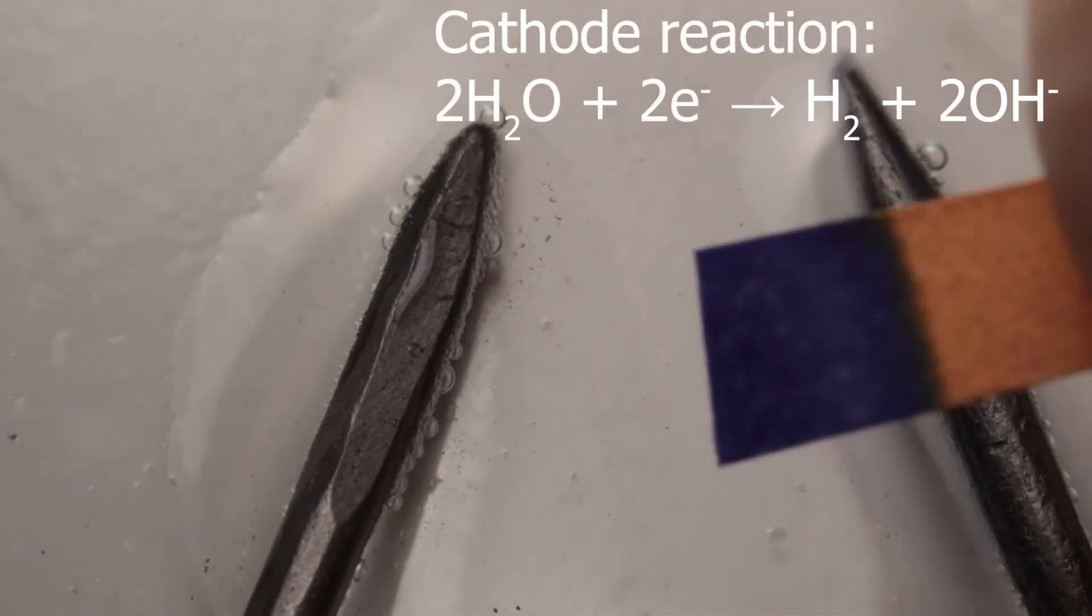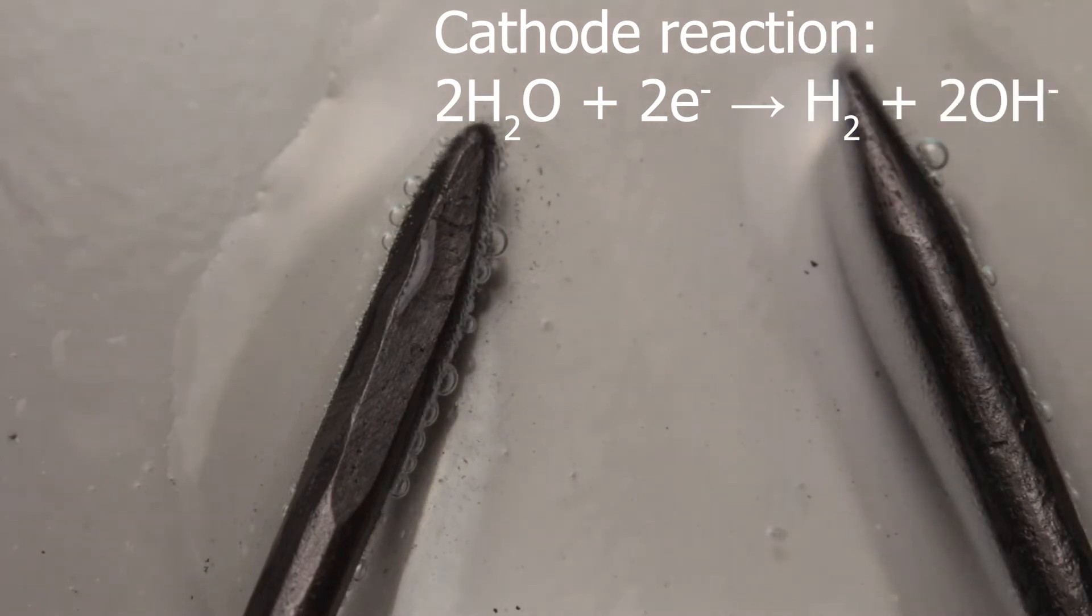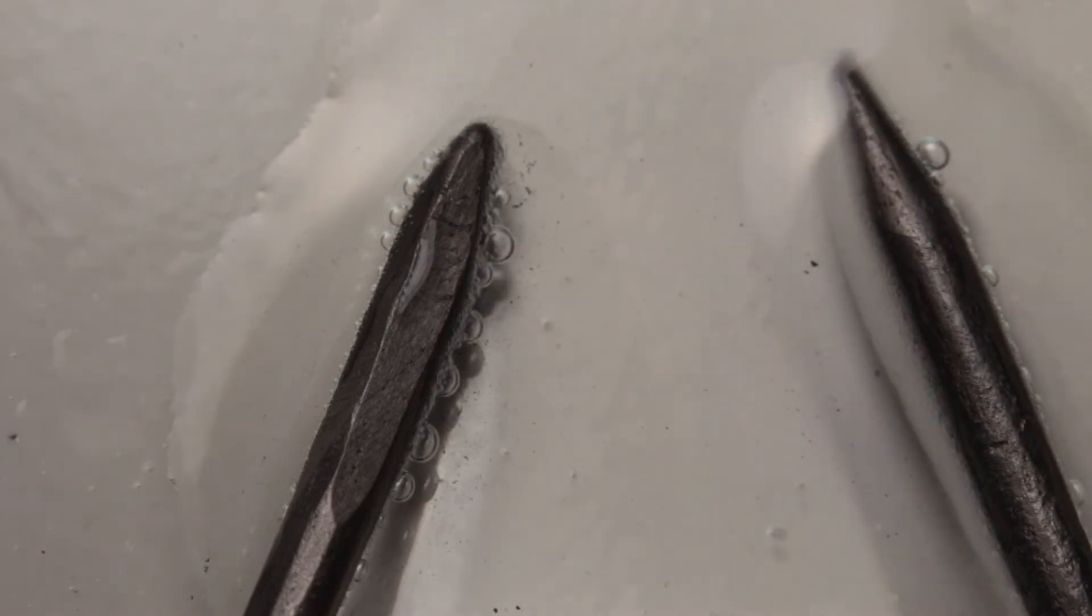You see I am testing it with pH paper. It turns blue, which means presence of hydroxide ions is detected. In fact at cathode, water has been reduced. Hydrogen gas is formed and hydroxide ions.